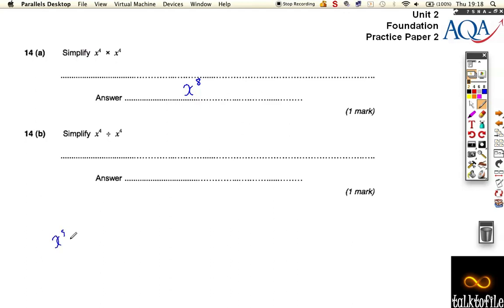So for example, x to the power 5 times x to the power 2 is going to be x to the power 7. You need to learn that.